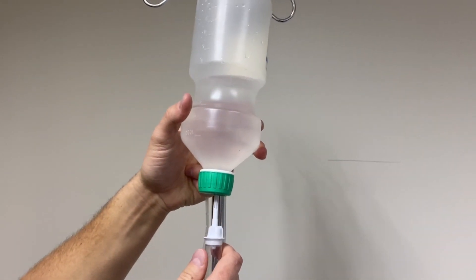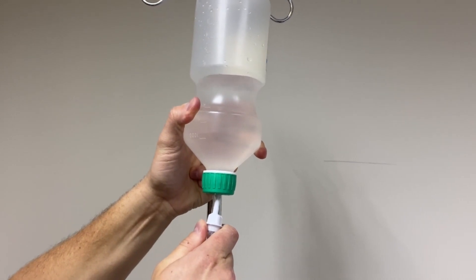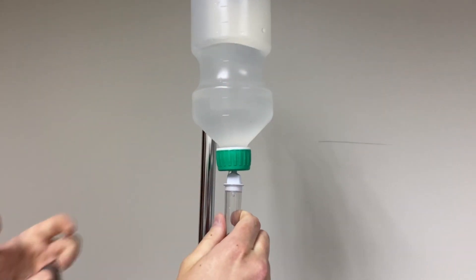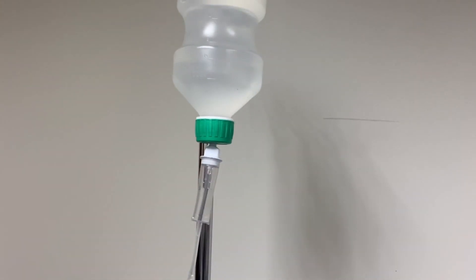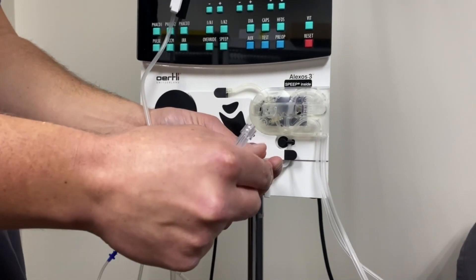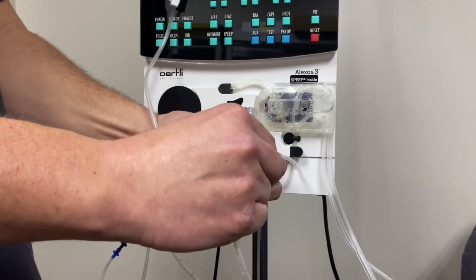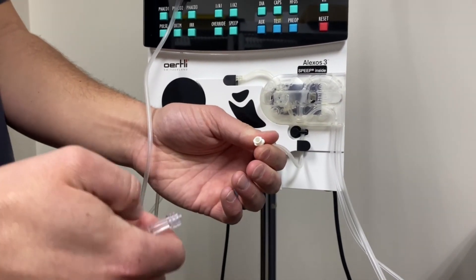Connect the giving set to the BSS bottle or bag. Fill the chamber halfway with BSS by squeezing. Remove the protection caps from the cassette infusion port and giving set. Connect the giving set to the infusion port of the Alaxos cassette.